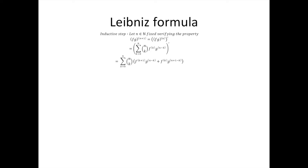And this is equal to the sum from k equals 0 to n of n choose k, times the (k+1)th derivative of f times the (n minus k)th derivative of j, plus the kth derivative of f times the (n minus k)th derivative of j.